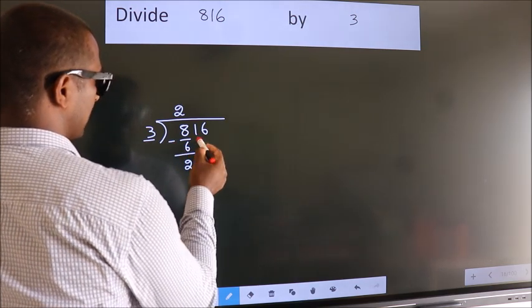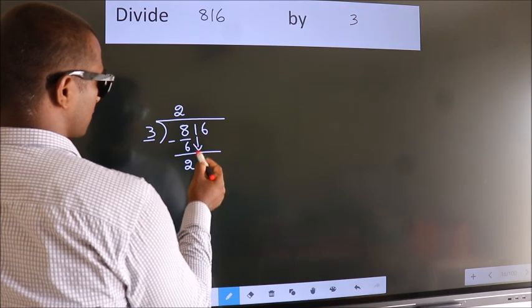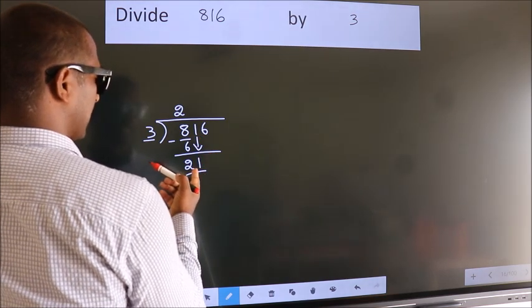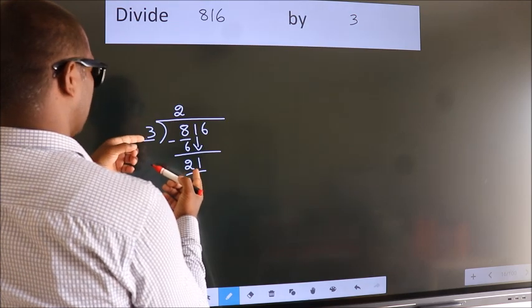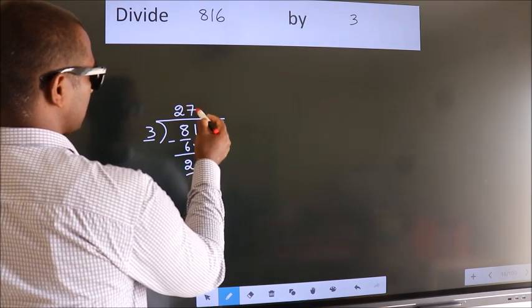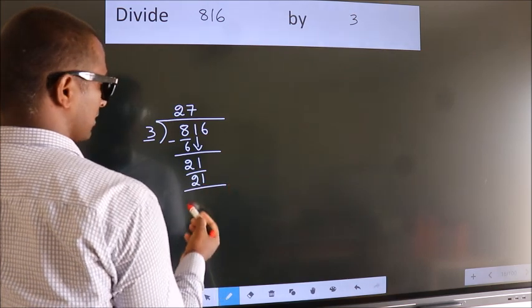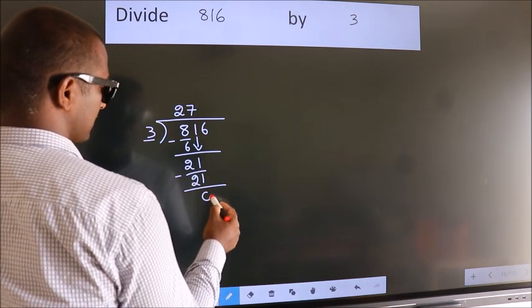After this, bring down the beside number. So, 1 down. So, 21. When do we get 21 in 3 table? 3 7s, 21. Now, we subtract. We get 0.